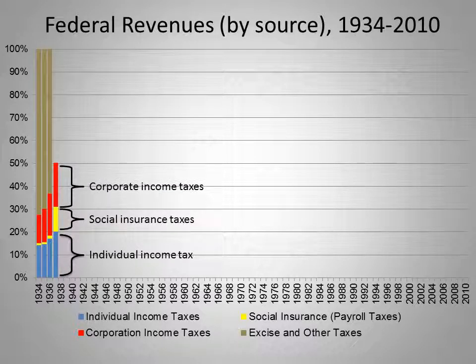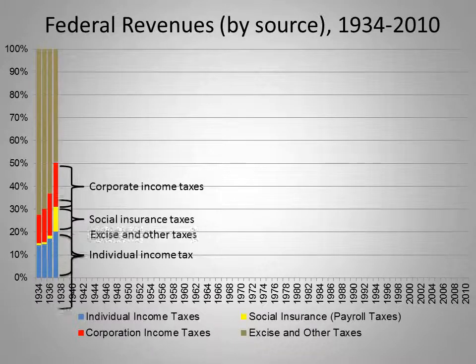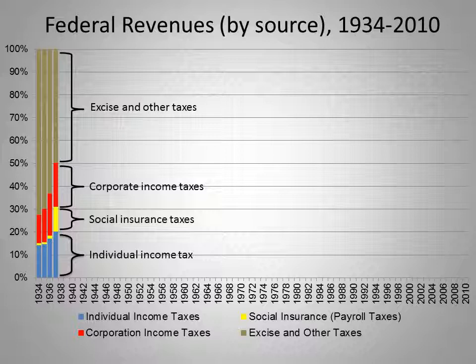The red bar is the corporate income tax, accounting for another 20% of federal revenue in the late 1930s. And the brown bar is excise and other taxes — mostly taxes on specific goods and services like alcohol, gasoline, and tobacco — and they still accounted for over half of federal revenues in the late 1930s, although this share was shrinking fast.